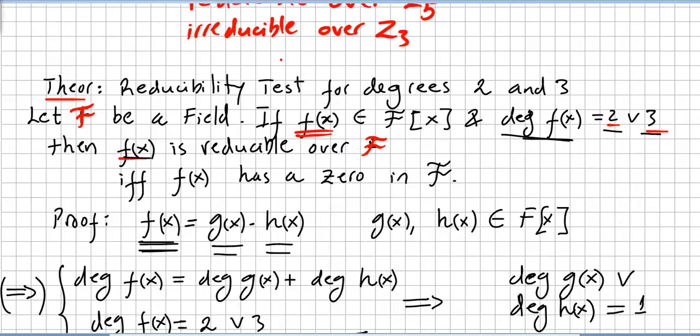In the previous video, we proved the theorem about reducibility test for degrees 2 and 3. The theorem is this one: Let F be a field. If f(x) is a polynomial in the field of polynomials...